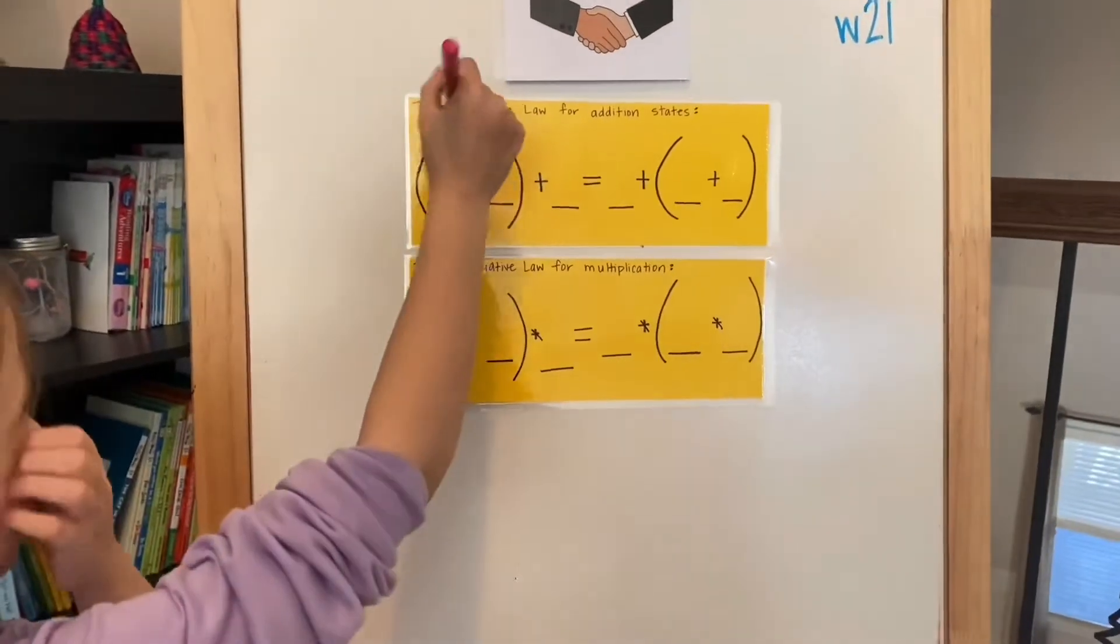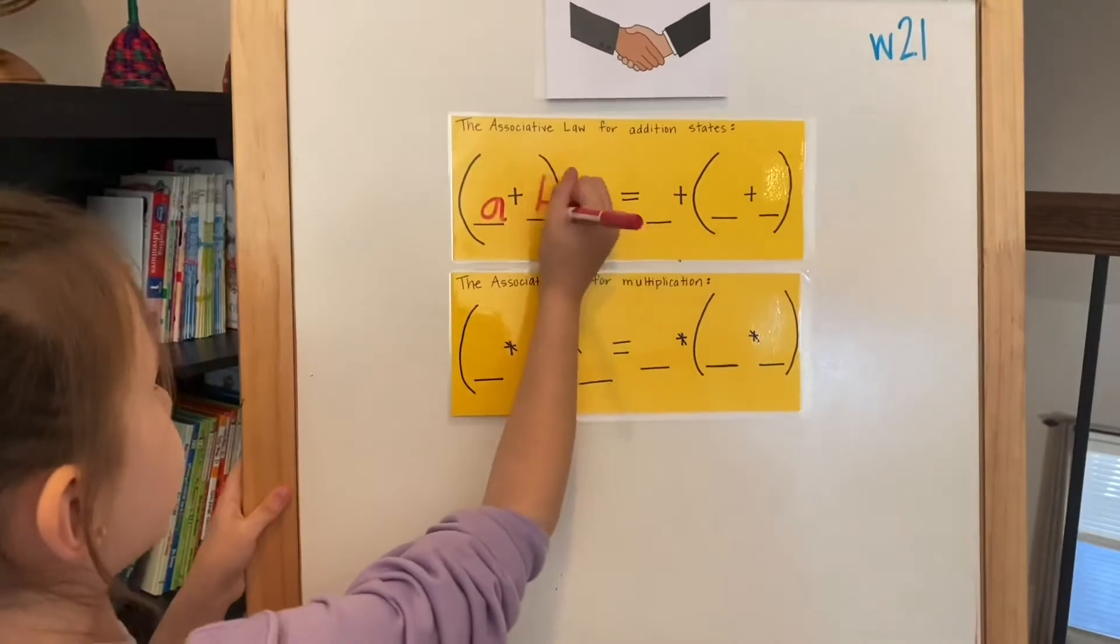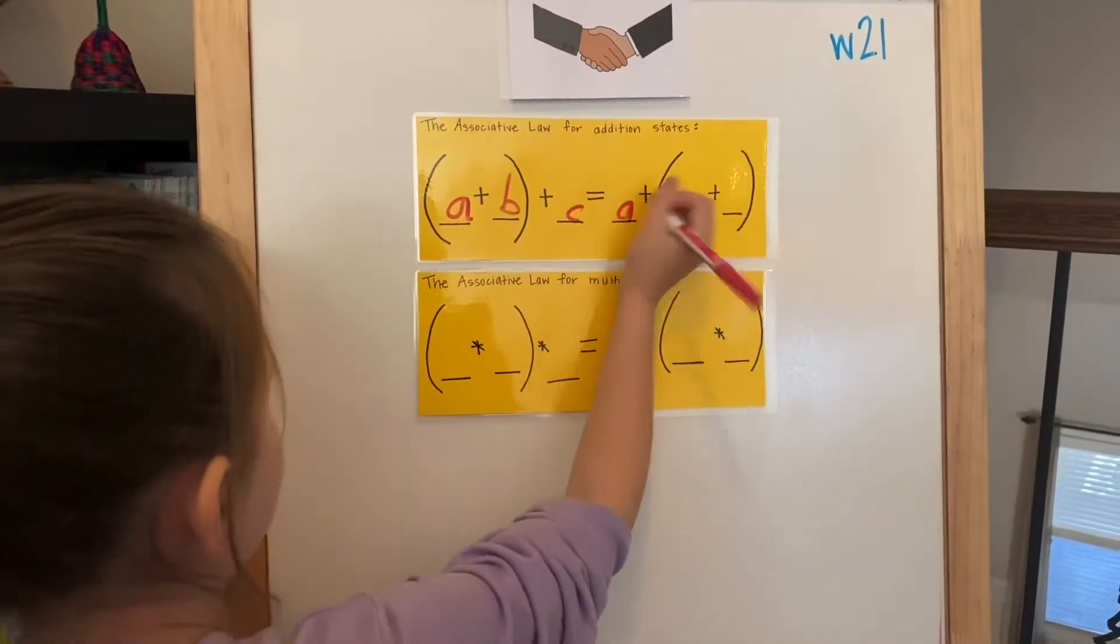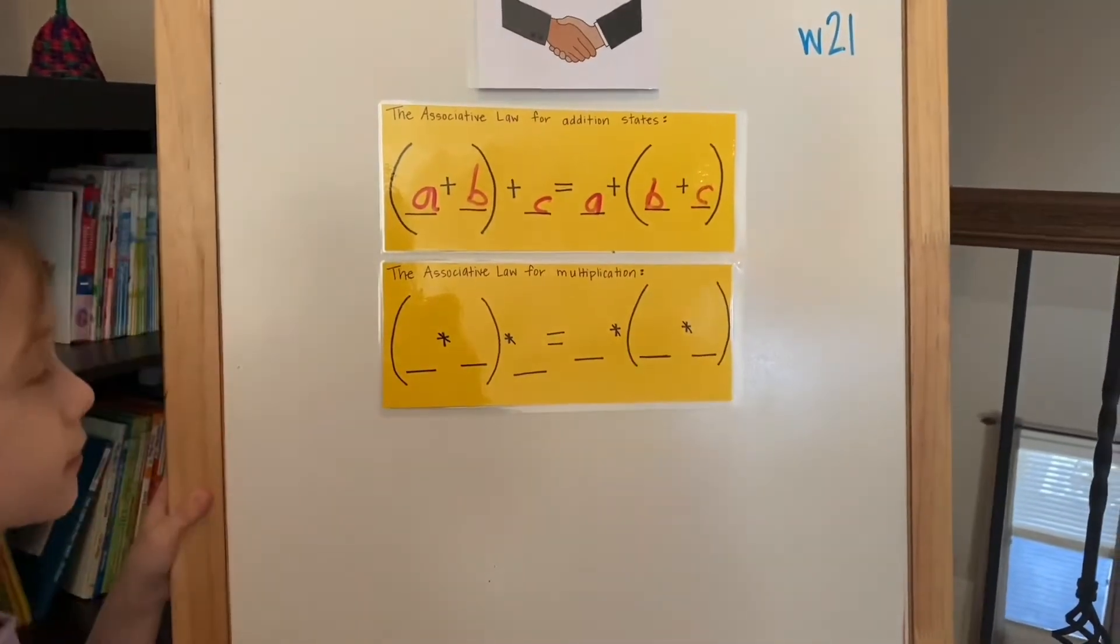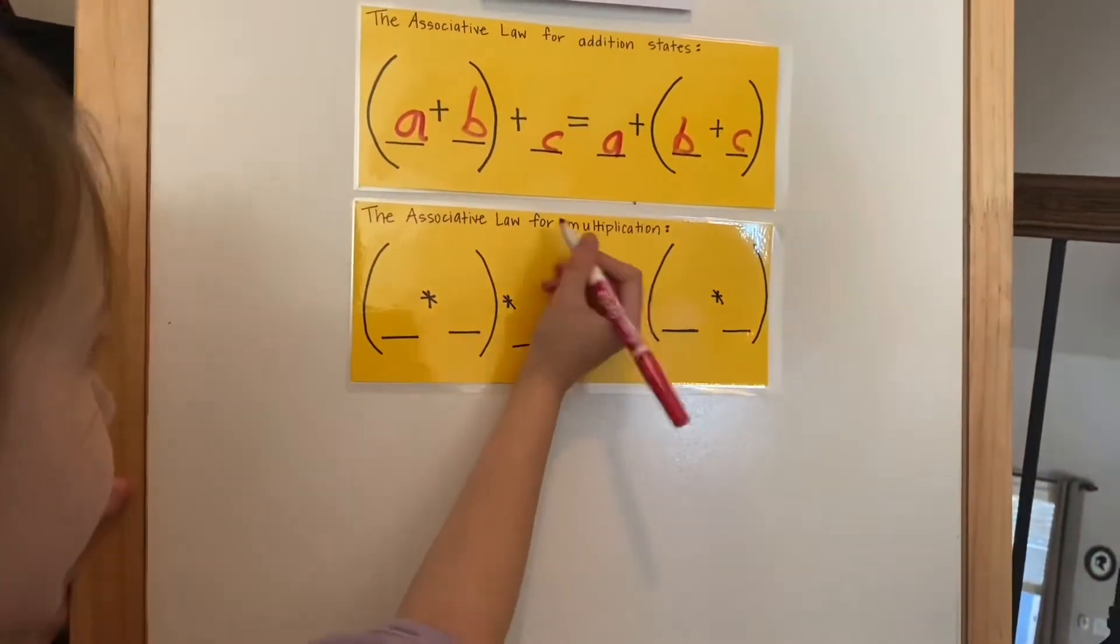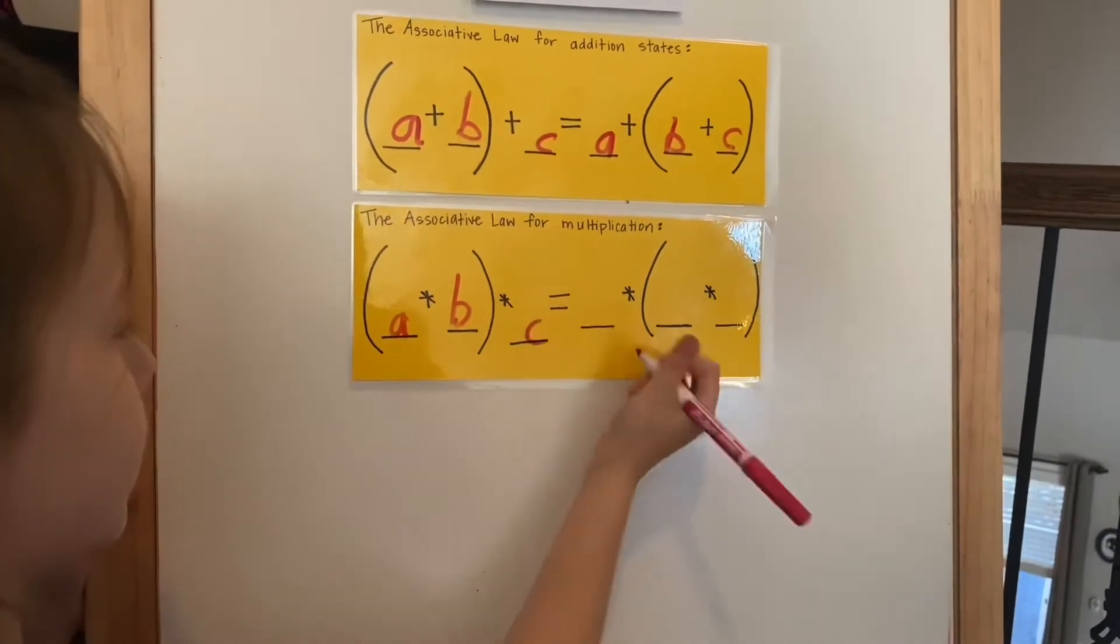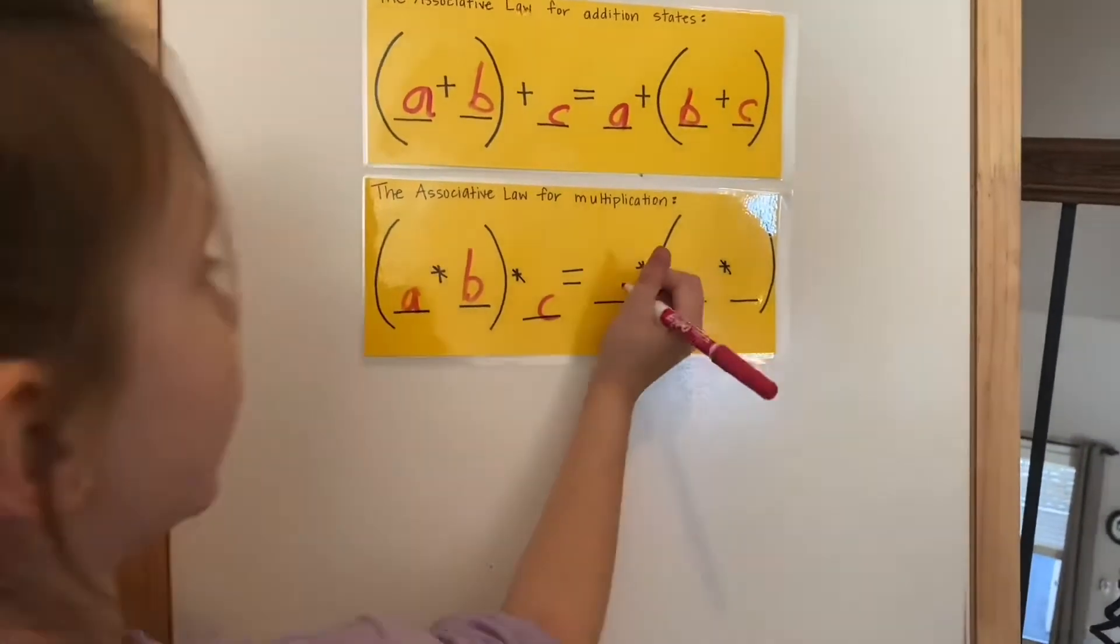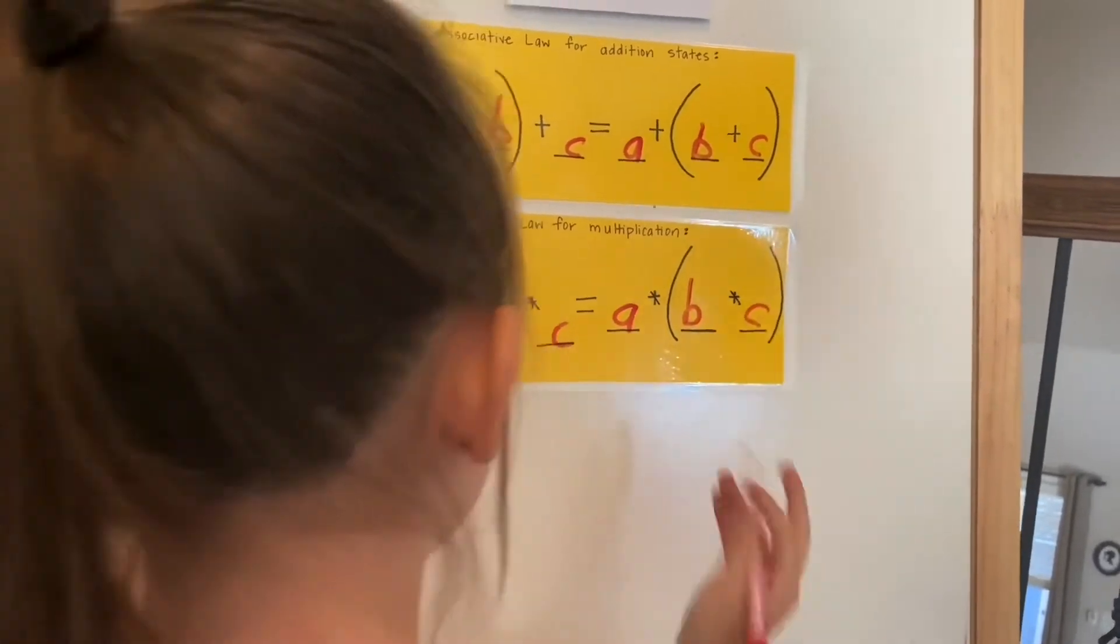The associative law for addition states: A plus B plus C equals A plus B plus C. The associative law for multiplication: A times B times C equals—oh, we dropped a pin—equals A times B times C.